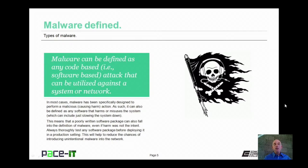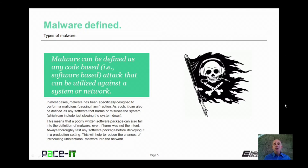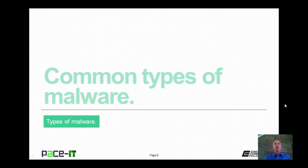That also means that a poorly written software package can fall into the definition of malware, even if harm was not the intent. Always thoroughly test any software package before deploying it in a production setting. This will help reduce the chances of introducing unintentional malware into the network. With the definition of malware covered, let's discuss common types of malware.